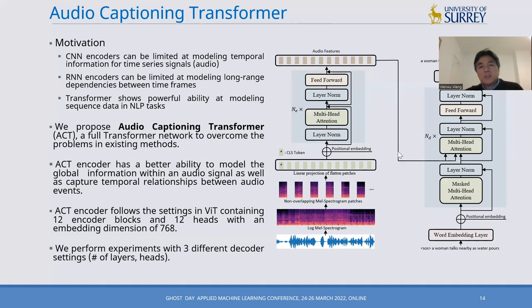Here is the diagram of our proposed system. The encoder takes the audio waveform, converts it into a log-mel spectrogram — the time-frequency representation of the audio signal — and then segments it into non-overlapping patches. These are linearly mapped to tokens, encoding the class tokens, and the information is passed through N identical transformer blocks. After these blocks, the input audio is converted into audio features.